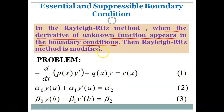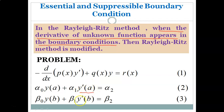The problem arises in the situation where you are given a boundary value problem subject to boundary conditions number 2 and number 3. In conditions 2 and 3, we can see that there is involvement of the derivative of y. So in such a case, certain modifications are required in the Rayleigh-Ritz method.